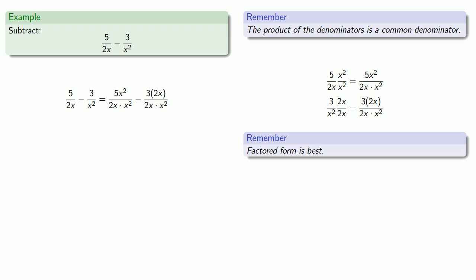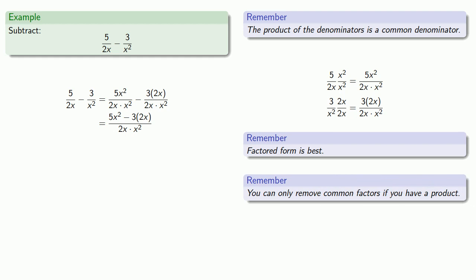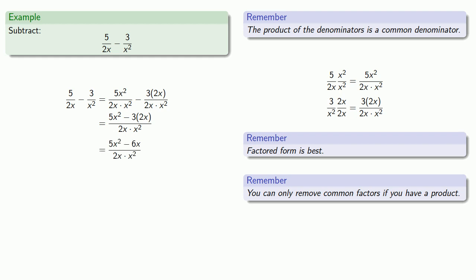Now our rational expressions have the same denominator, so we can subtract the numerators. We might want to try and reduce this, but remember, you can only remove common factors if you have a product. In the numerator, we don't have a product — we have a difference. So we have to expand this out. Let's multiply 3 by 2x. Now we sit with the numerator 5x squared minus 6x and try to factor it. We get a product: x times (5x minus 6). There's a factor of x in both numerator and denominator, so we can remove that, giving us our final answer.